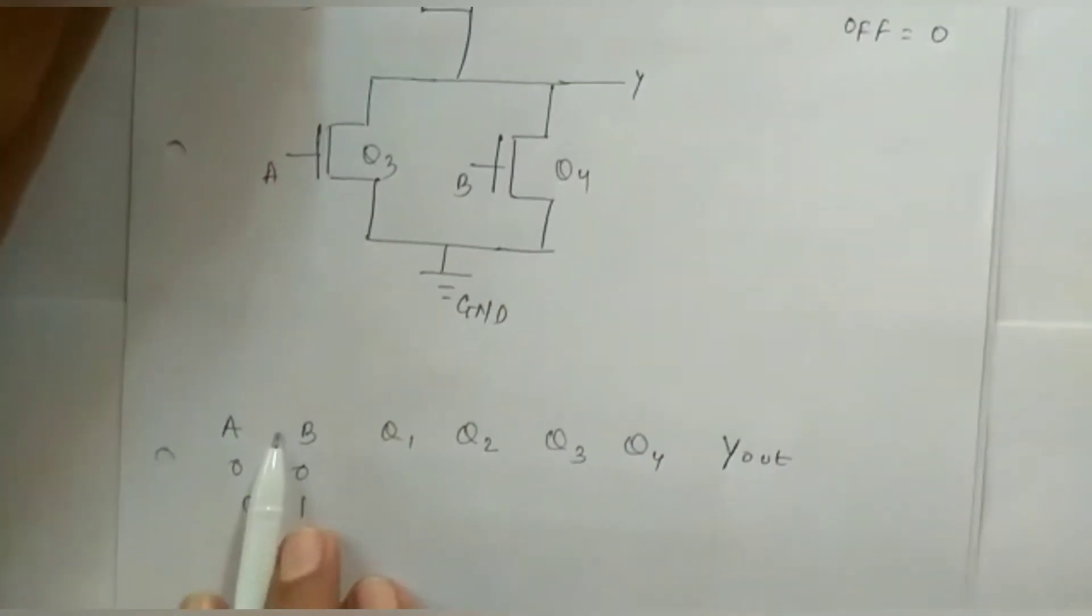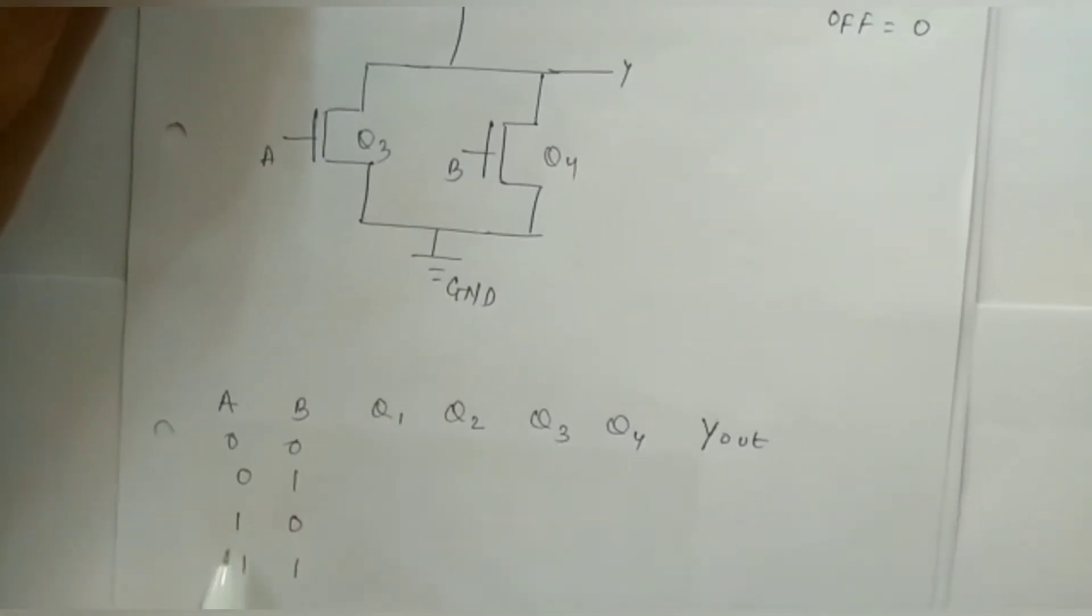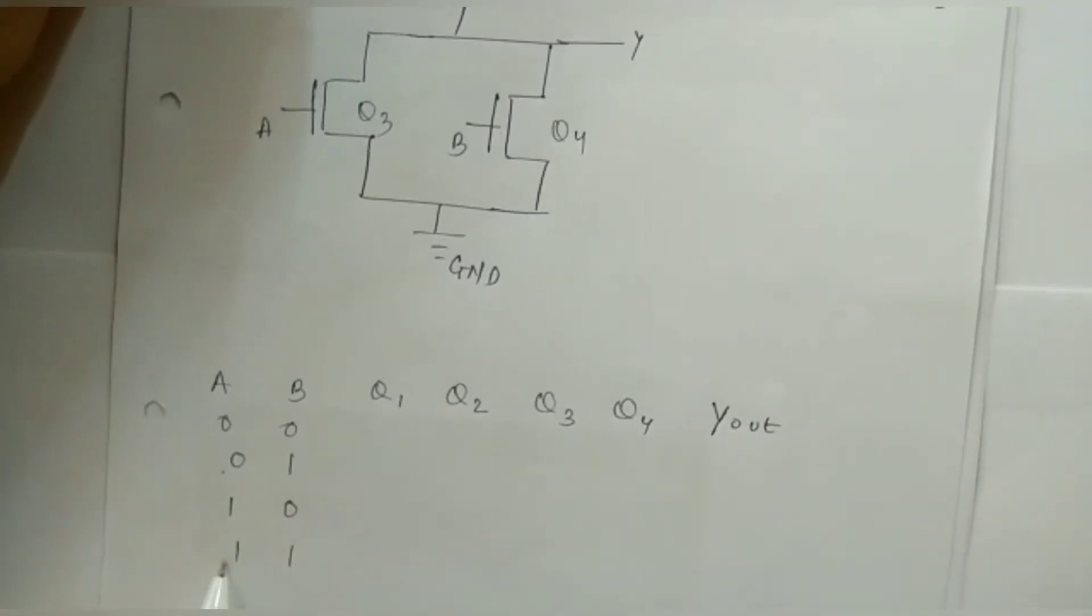Since it has two variables the combination will be 4. That is 00, 01, 10, 11.